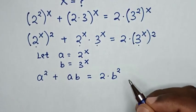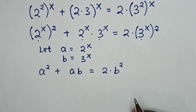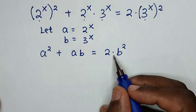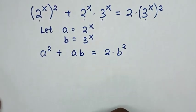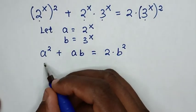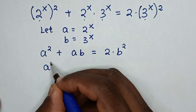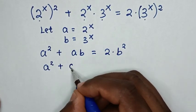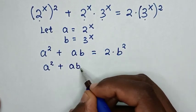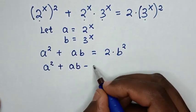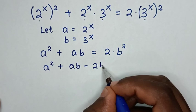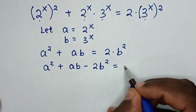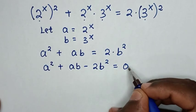In the next step, we take 2b squared to the left side, giving a squared plus ab minus 2b squared equals 0.